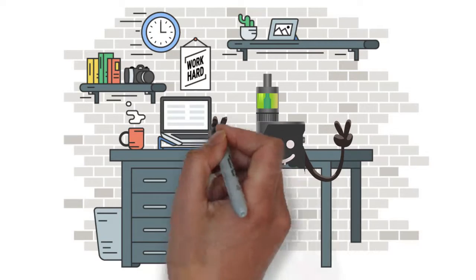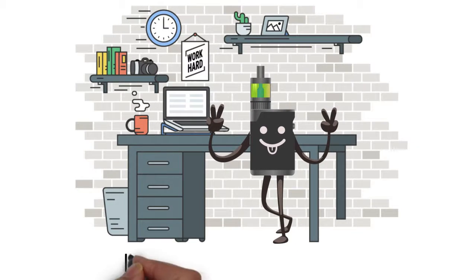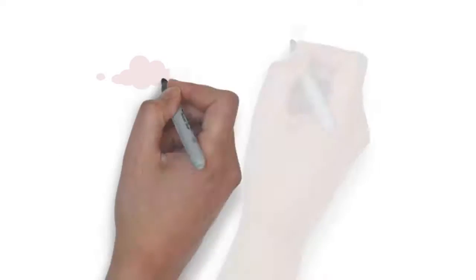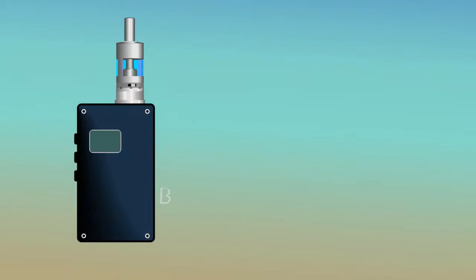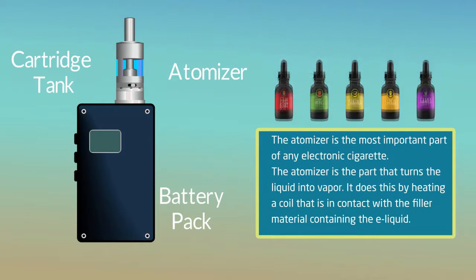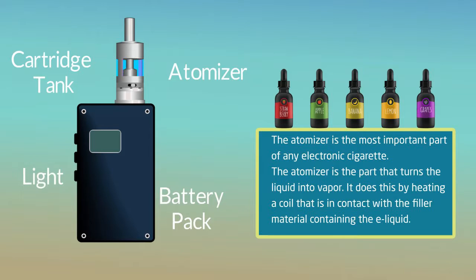Hi, my name is EC. That's what my friends call me. I'm an electronic cigarette. I was assembled and brought to life in a factory somewhere in China. I have a battery pack, a heating element called an atomizer, a cartridge tank where I store my flavored electronic juice, and a light.